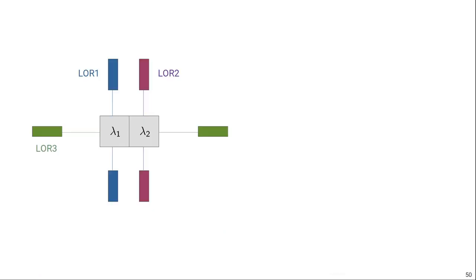Before explaining what we usually do instead, let's look at a short motivating academic toy example — actually one of the easiest reconstruction problems you can consider. We have an image with only two pixels or voxels: voxel 1 with unknown activity concentration lambda_1 and voxel 2 with unknown activity concentration lambda_2. We also have a very simplistic PET scanner with three detector pairs: the blue one called line of response 1 (LOR 1), the pink or purple one which is LOR 2, and the green one which is LOR 3.